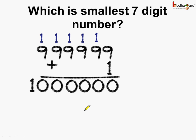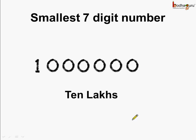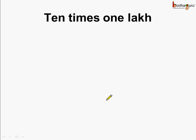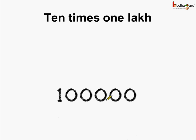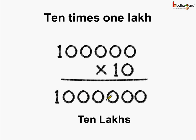Now, which is this number equal to? It is equal to 10 lakhs. So this is equal to 1 followed by 6 zeros and it is called 10 lakhs. Now we know the smallest 7-digit number is 10 lakhs, which is 1 followed by 6 zeros. We can also say 10 times 1 lakh is equal to 10 lakhs, so 1 lakh multiplied by 10 gives us 10 lakhs.